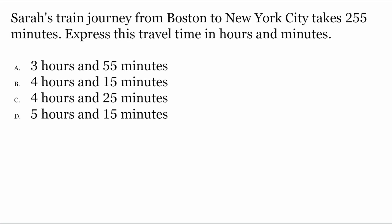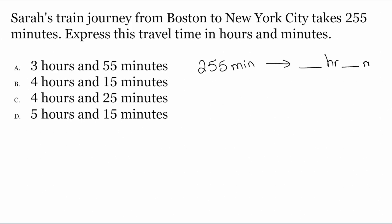Here in this problem, the goal, when we read the question sentence, it says: express this travel time in hours and minutes. And if we read the first sentence, given how short the problem really is, we see that it says Sarah's train journey from Boston to New York City takes 255 minutes. So if we understand this properly, we are starting with 255 minutes and we need to turn this into hours and minutes.